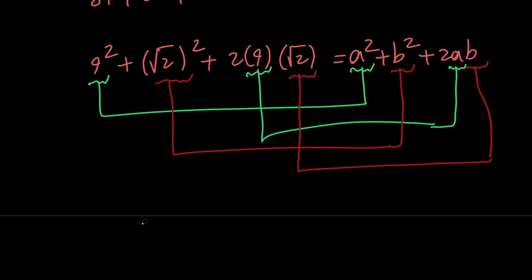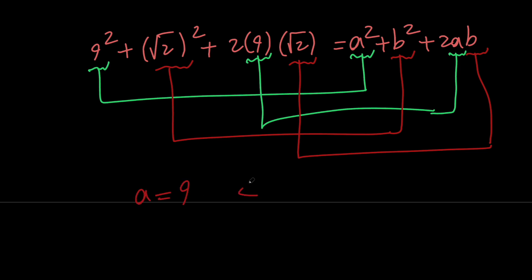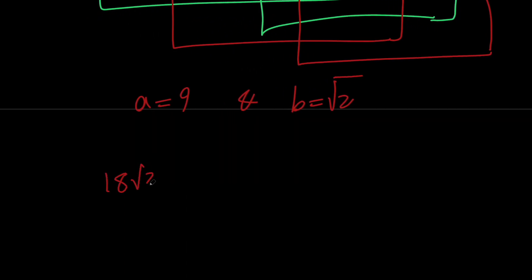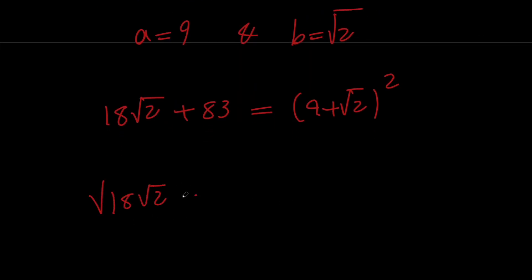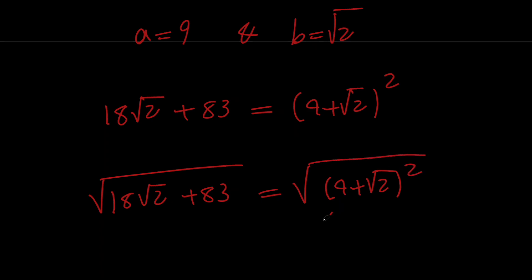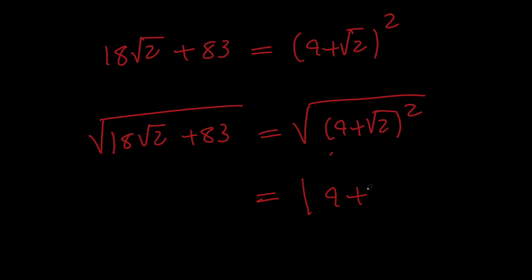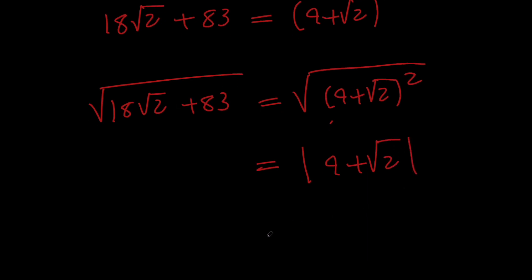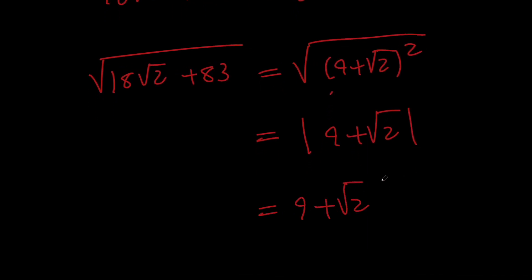So we found out that a is 9 and b is root 2 which means that the square root of 18 root 2 plus 83 is equal to the square root of 9 plus root 2 quantity squared which simplifies to the absolute value of 9 plus root 2 which equals 9 plus root 2 because 9 plus root 2 is a positive quantity.